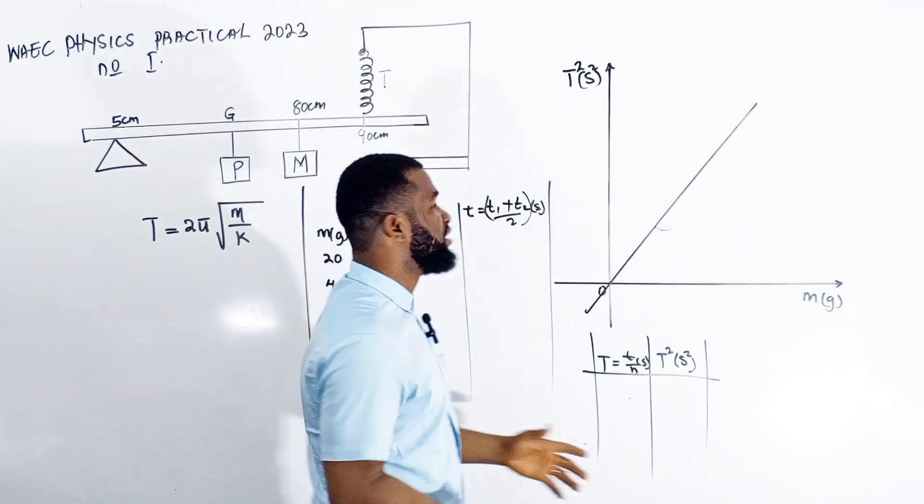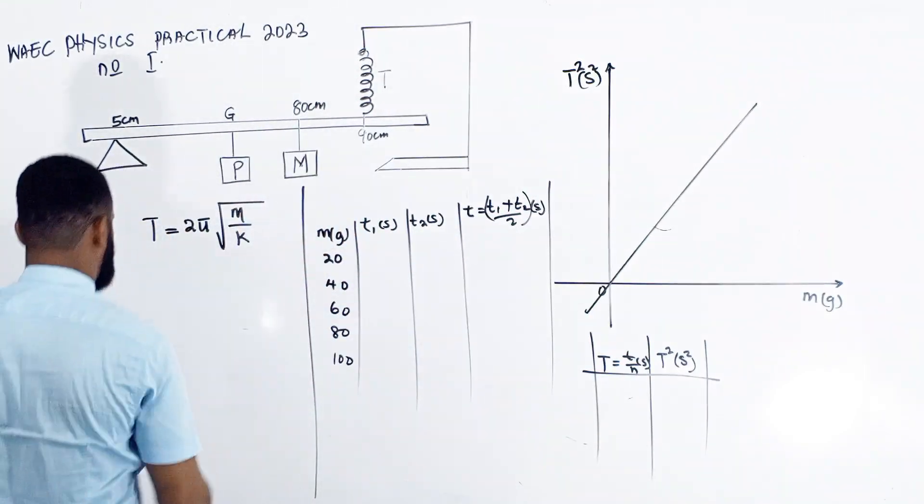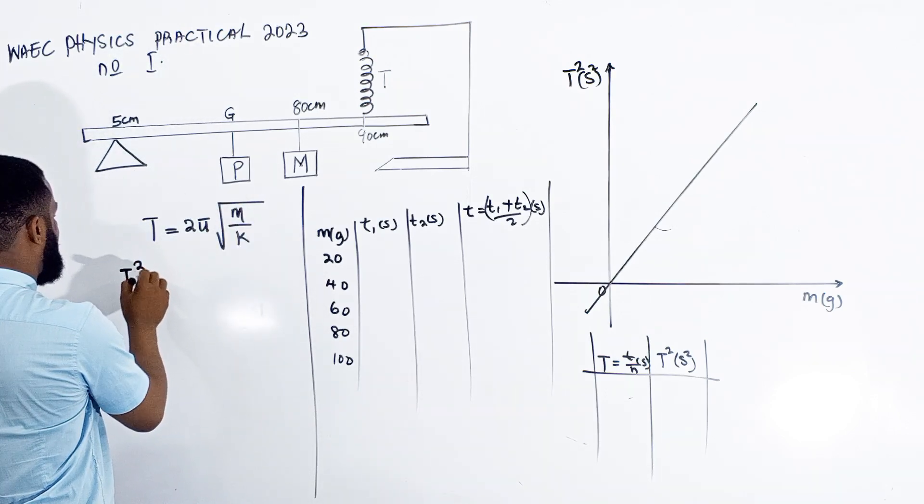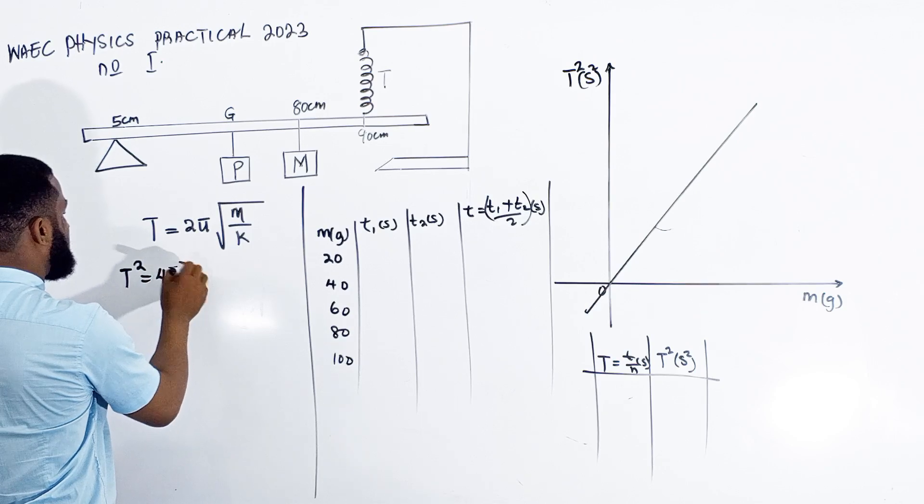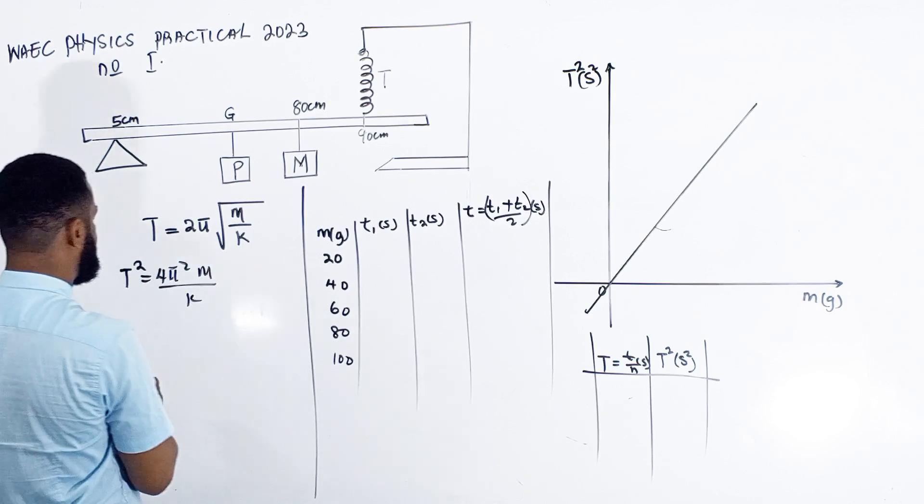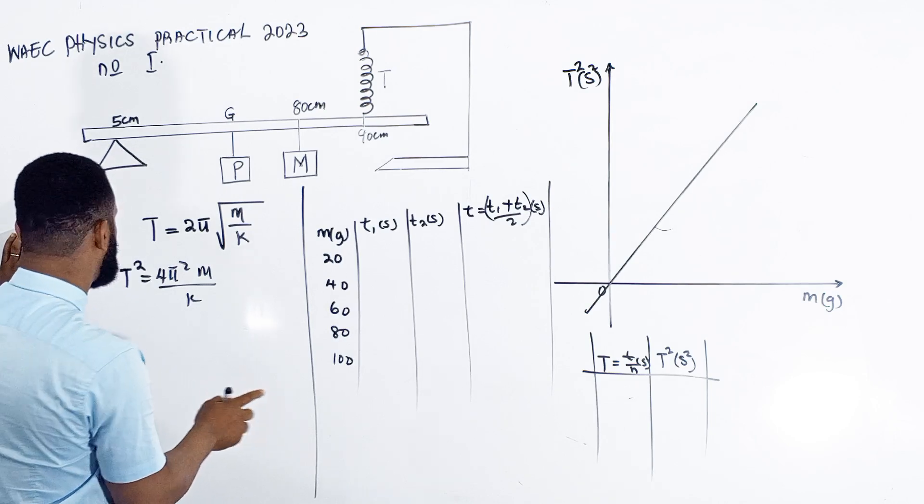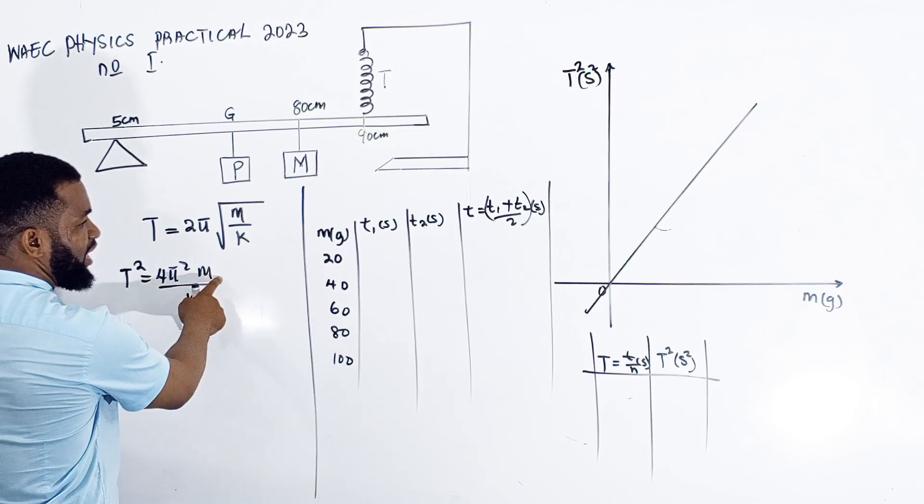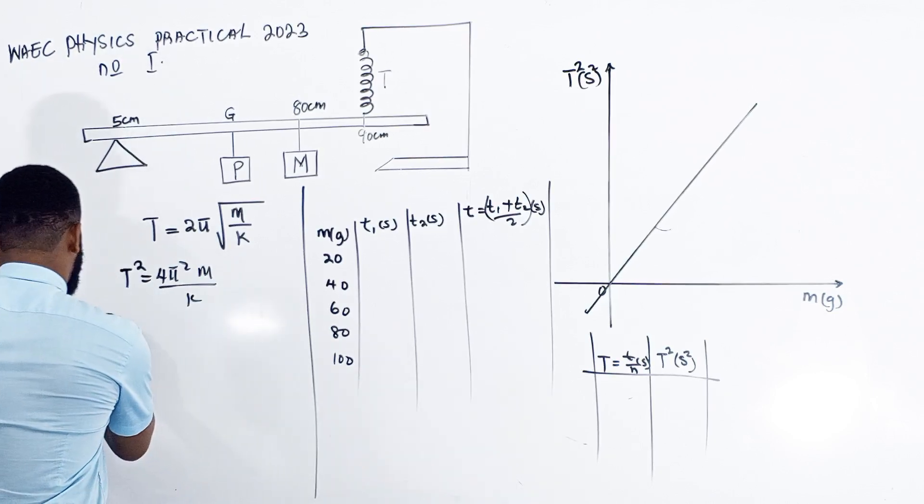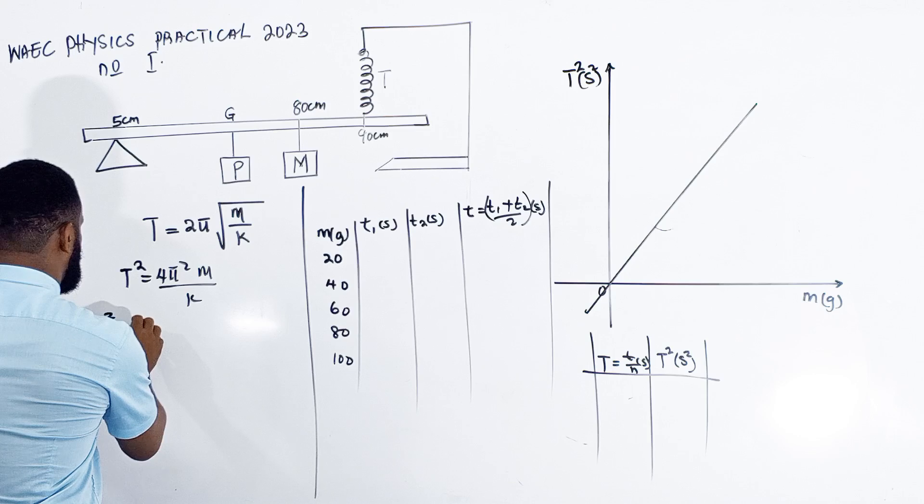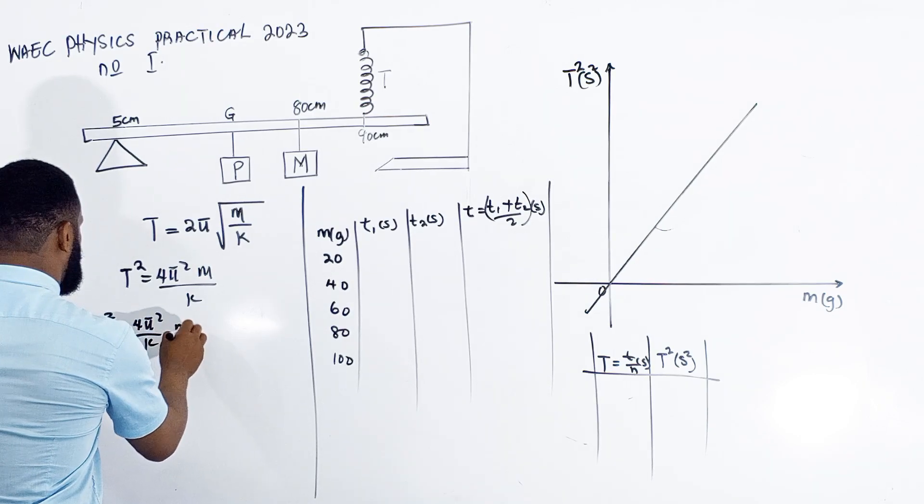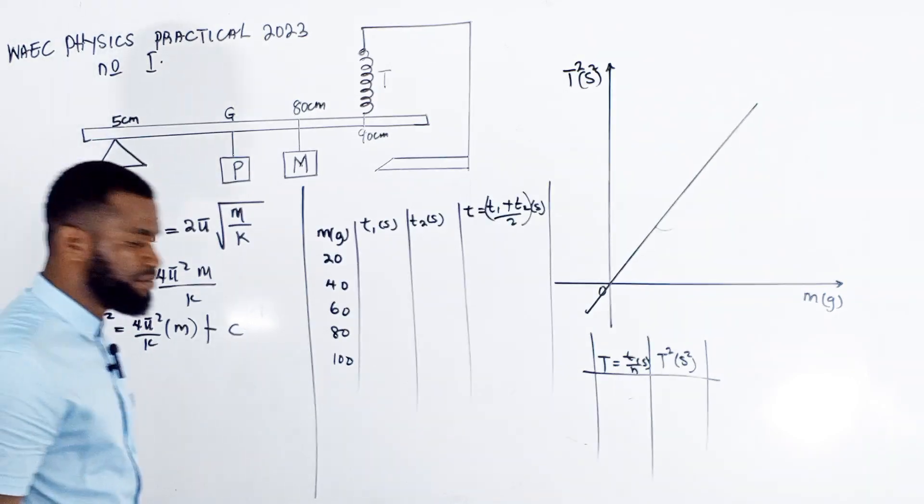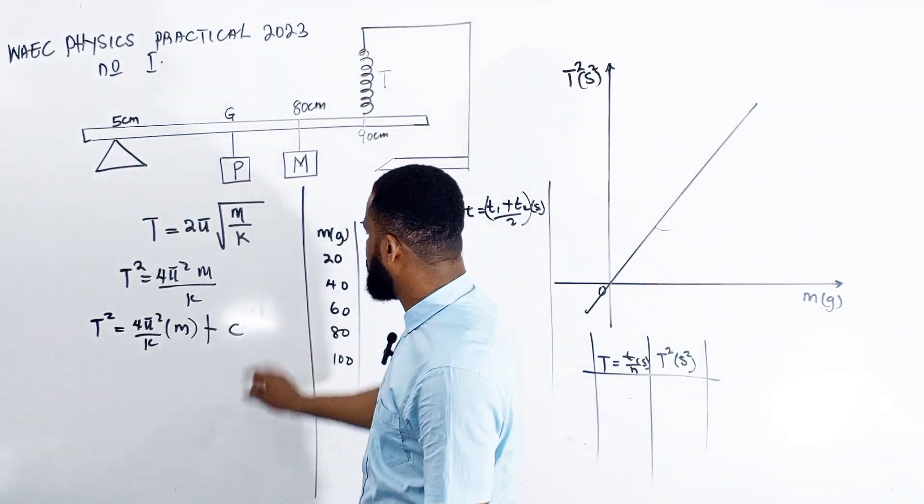When we come to this part, remember that T² = 4π²M/K. We're going to plot a graph of T² against M. Therefore, we have T² = (4π²/K)M + C.